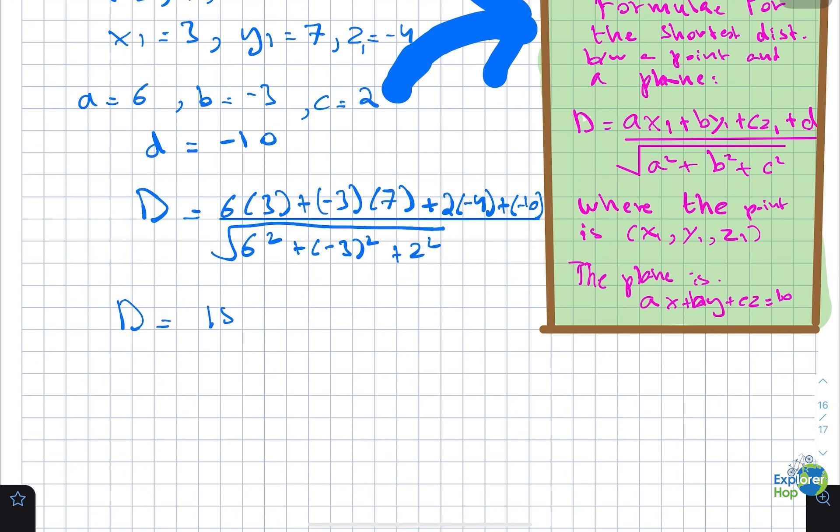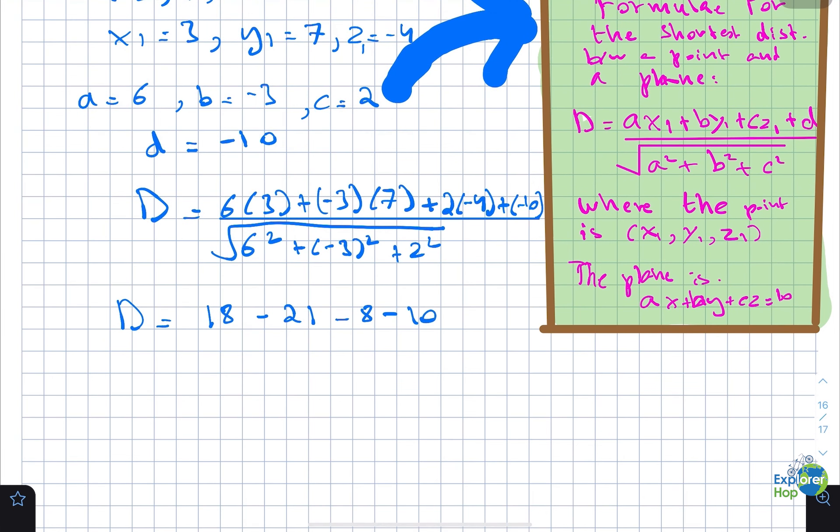This becomes 18 minus 21 minus 8 minus 10, divided by the square root of 36 plus 9 plus 4.